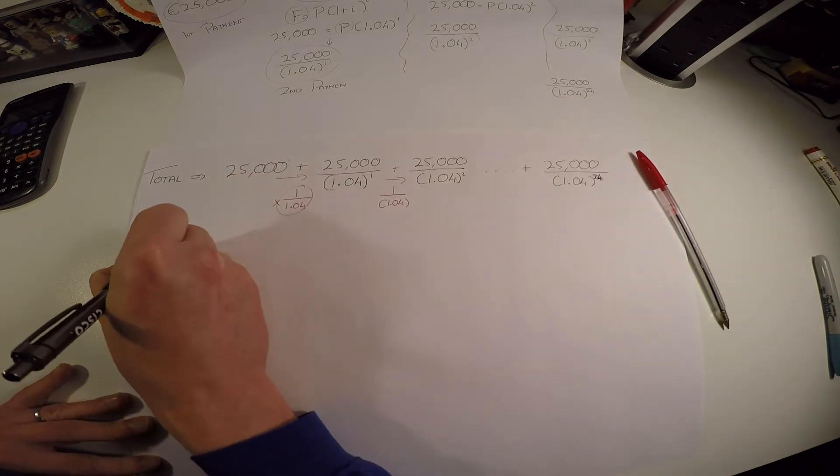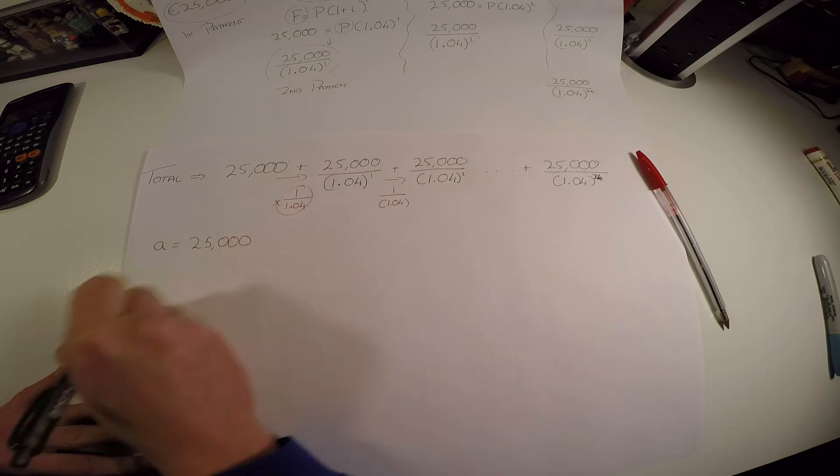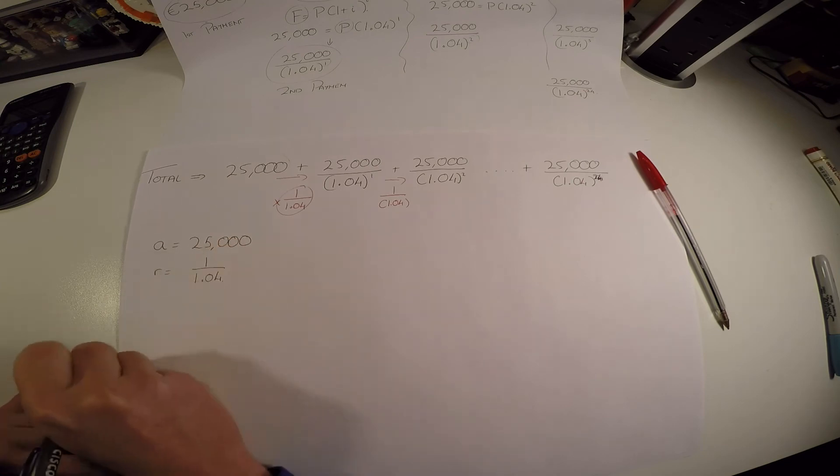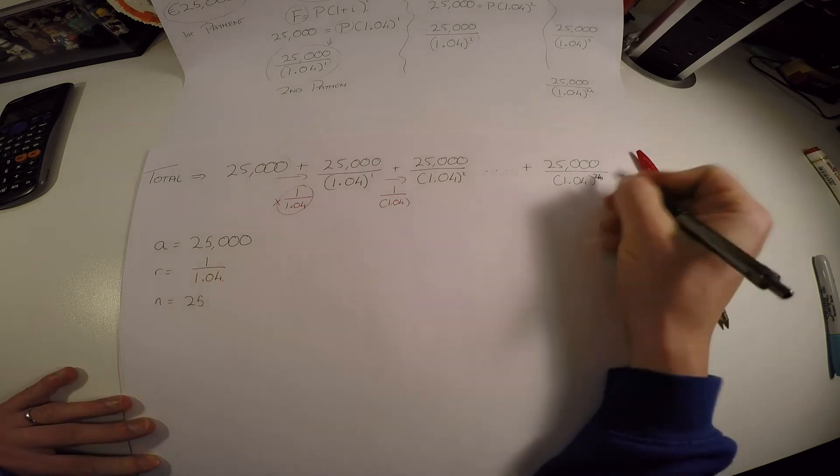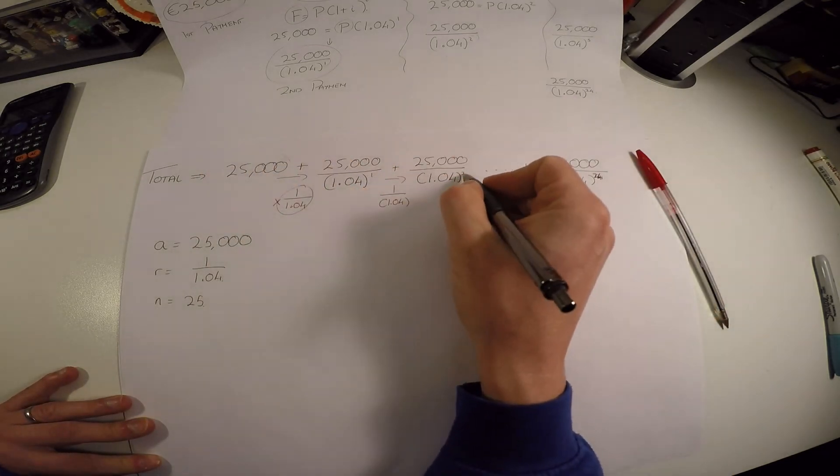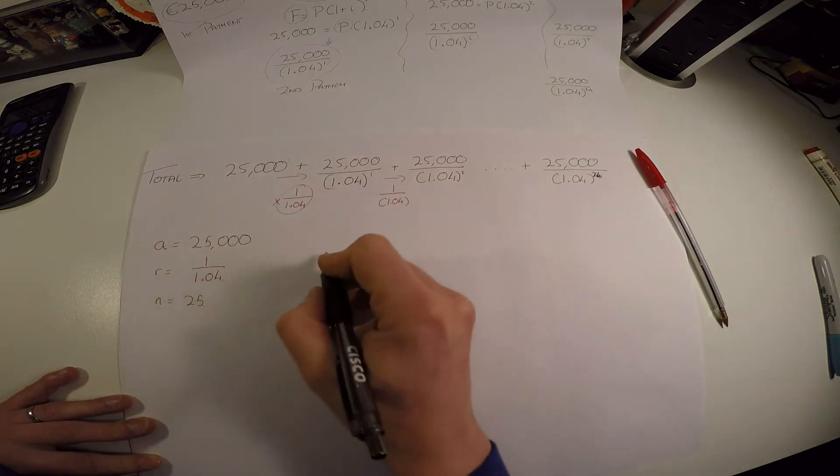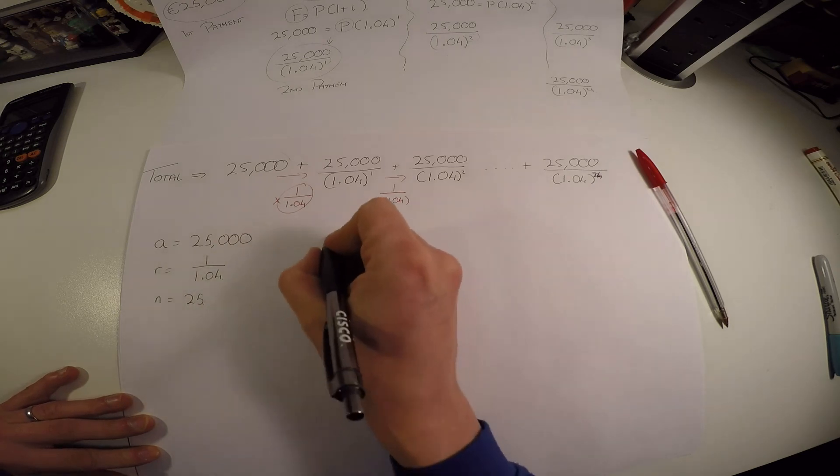Now what's our first term? Well, the first term A is 25,000. Our common ratio is 1 over 1.04, and how many terms do we have? We do have 25 terms. Even if something goes up to 24, the second one is one, the third one goes to two. So the first term is here. Now let's think of our geometric series formula.